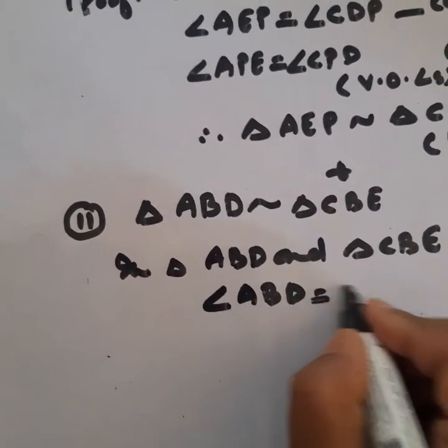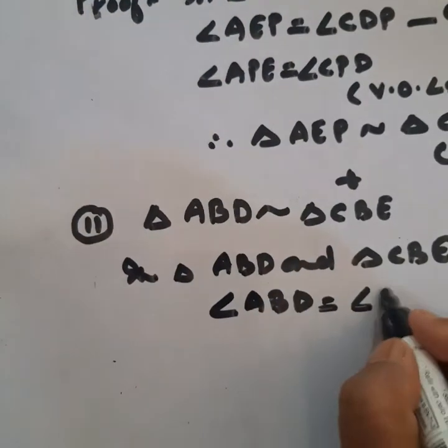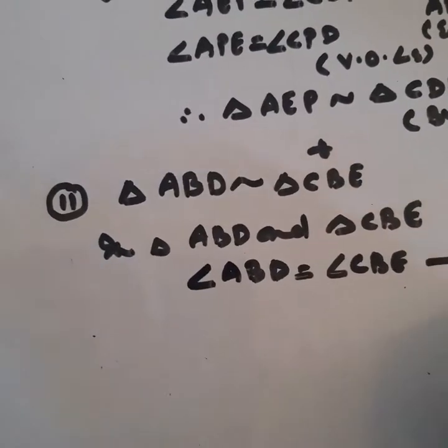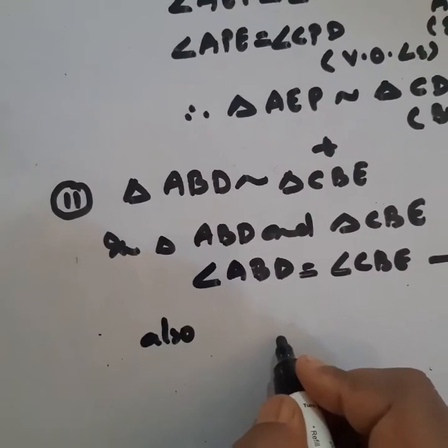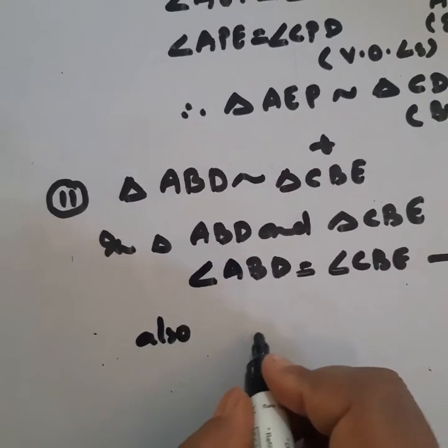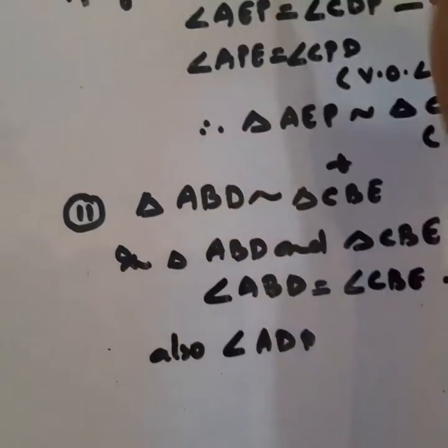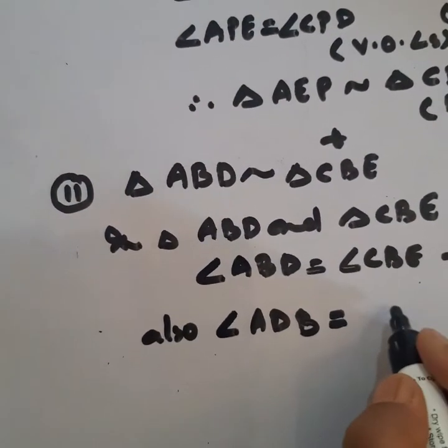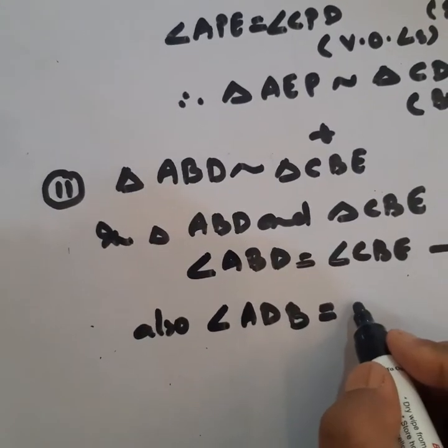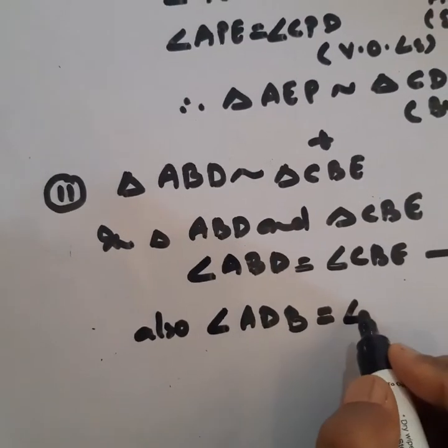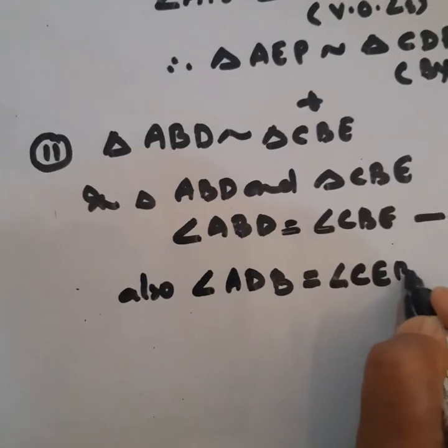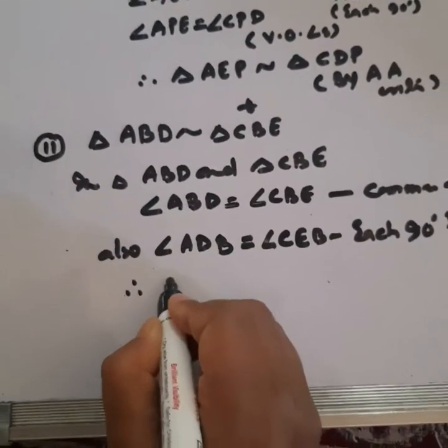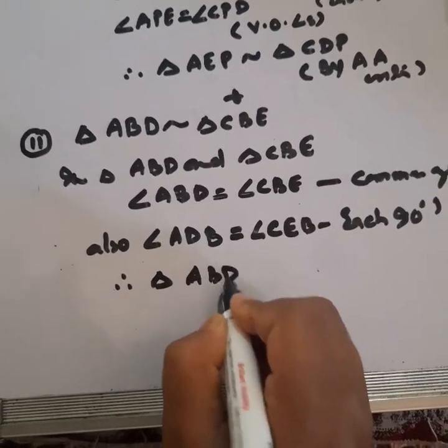Also, angle ADB is equal to angle CEB, each 90 degrees. Therefore, triangle ABD is similar to triangle CBE by angle-angle criterion.